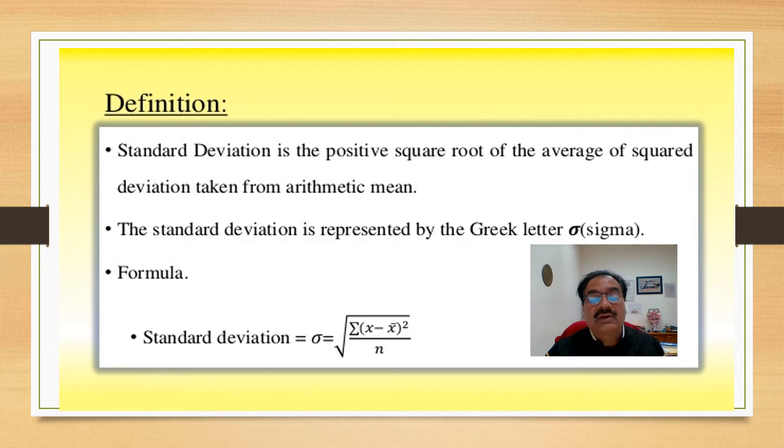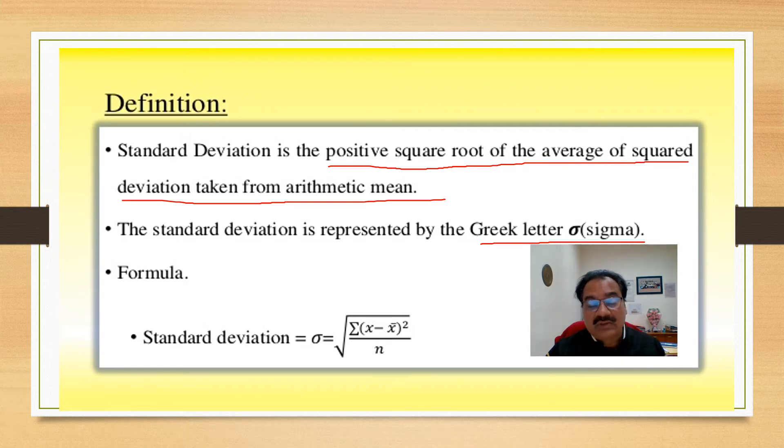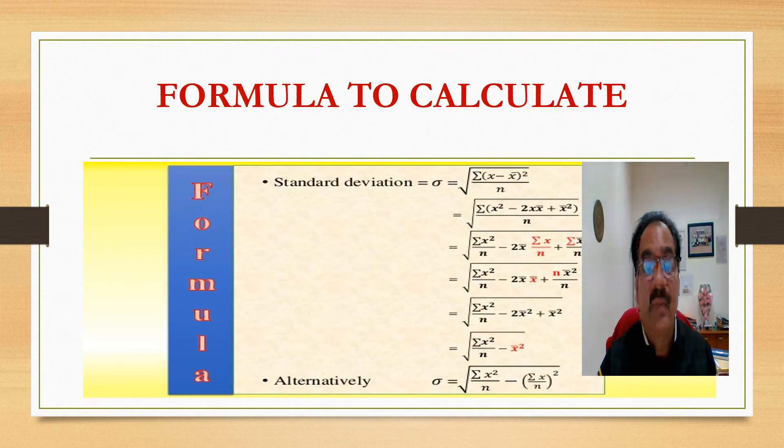Now, standard deviation is the positive square root of the average of squared deviations taken from arithmetic mean. The standard deviation is represented by the Greek letter sigma. And the formula, the first formula you can note is: sigma equals under root summation of (x minus x bar) whole square by n.